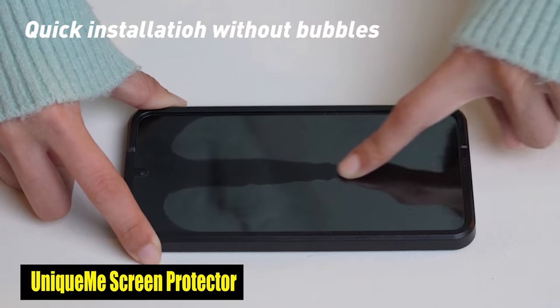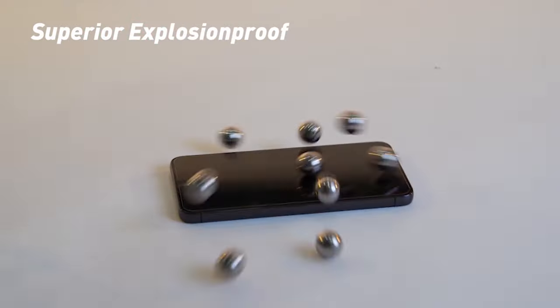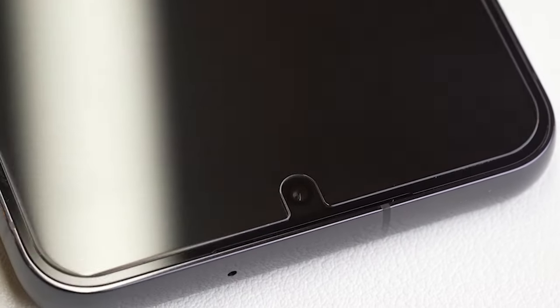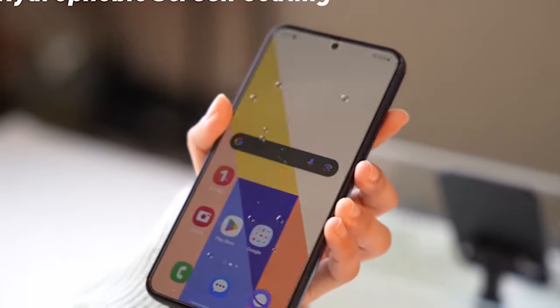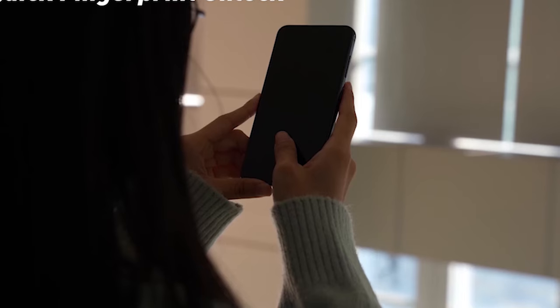Number 2: Unique Me Screen Protector. The Unique Me Screen Protector features an edge-fortifying design, ensuring maximum durability and resistance against daily wear and tear. Its tempered glass construction is specifically engineered to provide unrivaled protection to your S24 Plus, giving you peace of mind and allowing you to enjoy your device without worrying about potential damage.